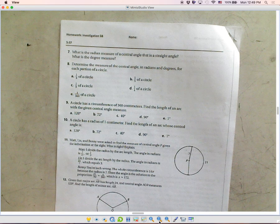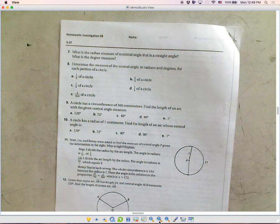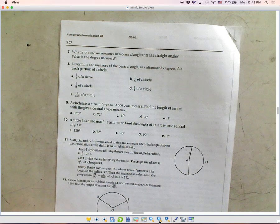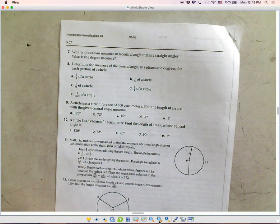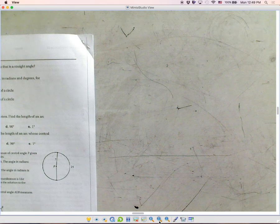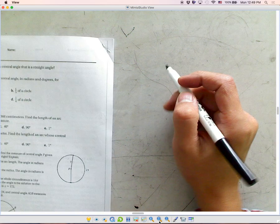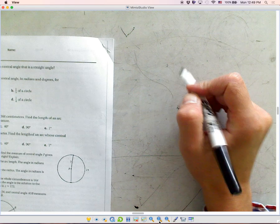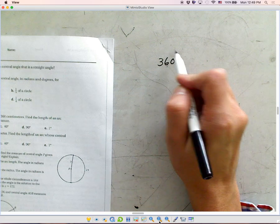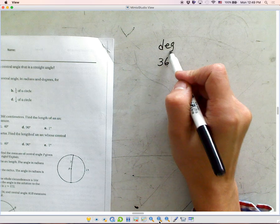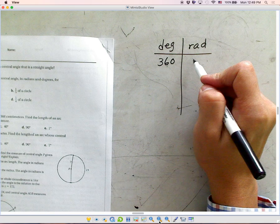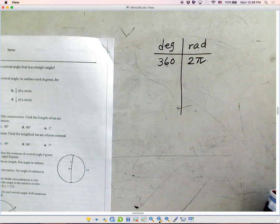Let's look at number 8 for lesson 5.07. It says, determine the measure of central angle in radians and degrees for each proportion of a circle. So the radians is 2π. If you go around the circle, that's 360 degrees. For the radians, it is 2π.